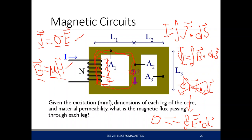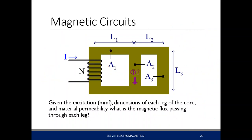We call this the integral of H·dl — your magnetic potential, Vm. Specifically, the negative integral of H·dl is your magnetic potential. Recall from lecture 7, it is also called magnetomotive force, or MMF, similar to how we call the electric potential the electromotive force.